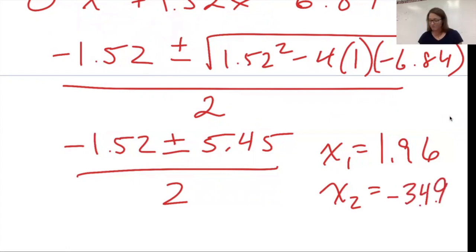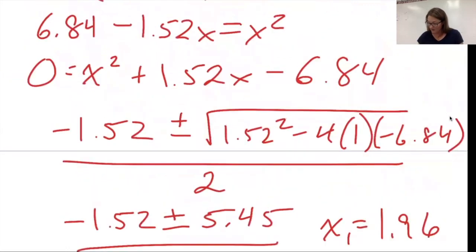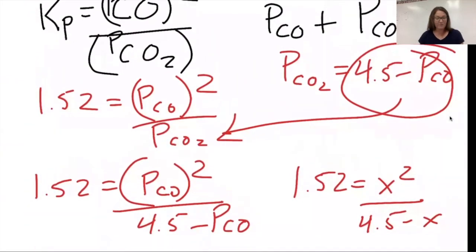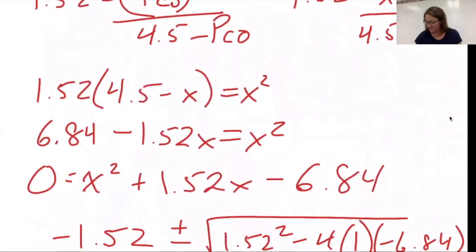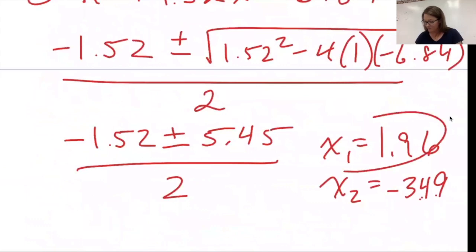Looking back up, we're going to see which root makes sense at all. It doesn't make sense for me to have a partial pressure that's negative. So it's going to have to be that my positive root is the one that makes sense.